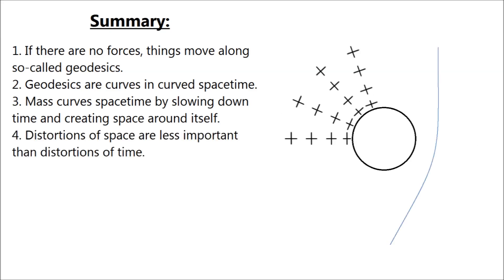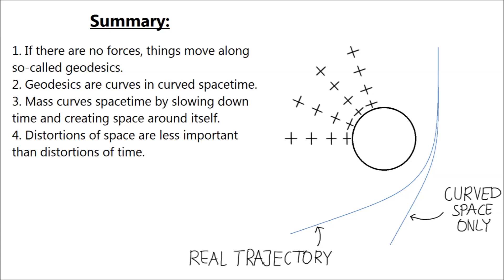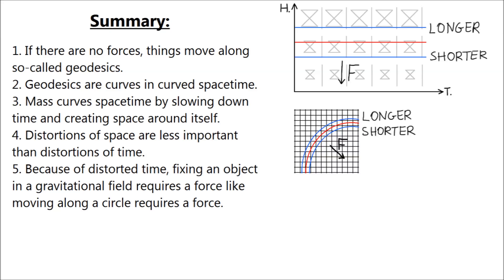Curved space slightly changes trajectory of things that quickly pass by, but most of what we perceive as gravitational attraction is due to slowing time. In such distorted time, levitation requires force for the same reason why moving along an arc requires a force. Except that the direction of the force is flipped by special relativity.